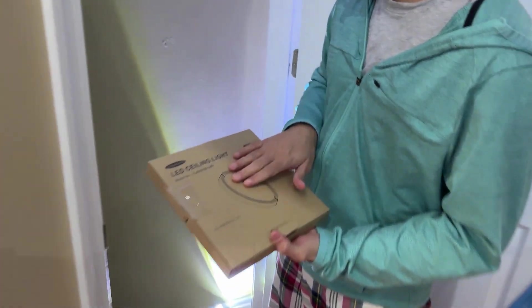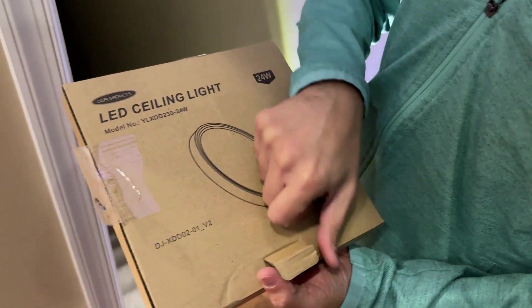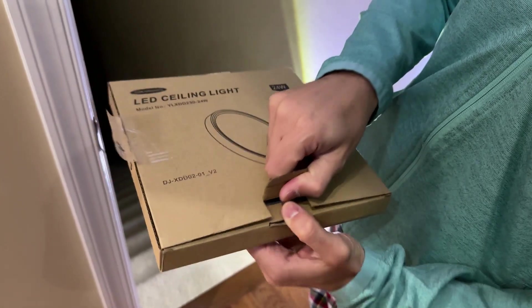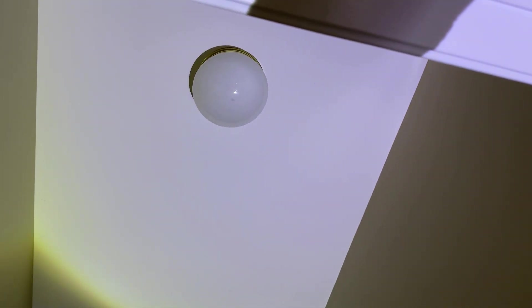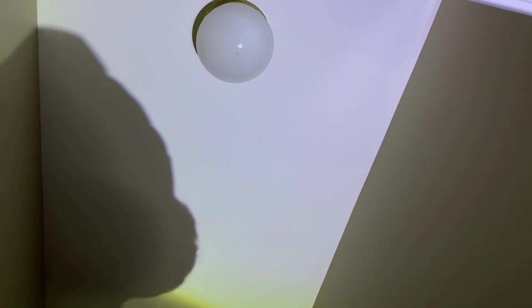Hello and welcome to another video. Today I have this DealGadget LED ceiling light. This is about 9 inches in diameter. I have an old fixture here. You can see it has that gold rim, like a spherical fixture. I want to modernize it with the LED fixture.